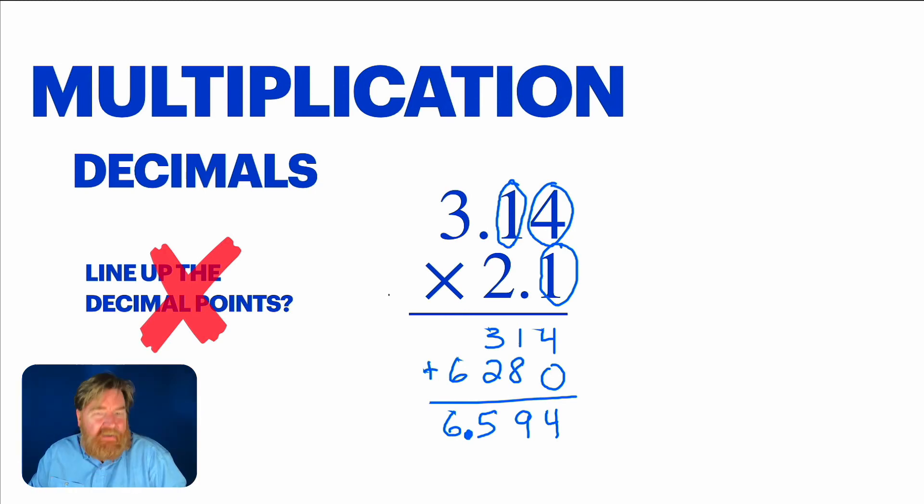It's a number close to three times a number close to two. So the answer better be in the neighborhood of six. So the decimal point only makes sense right there. Three places because I got three decimal places in the factors that we multiply.